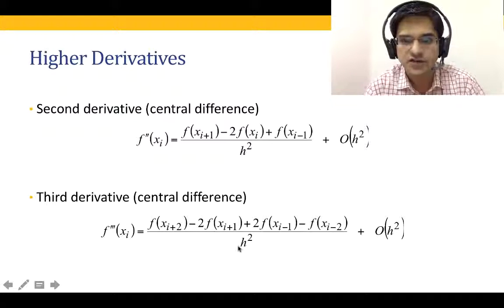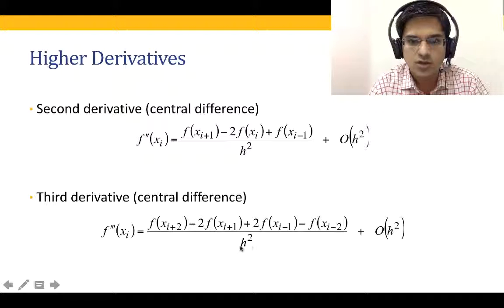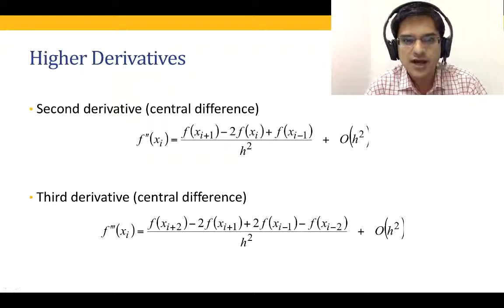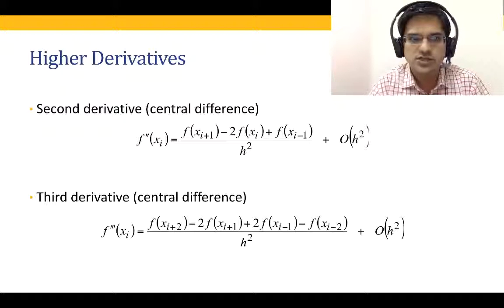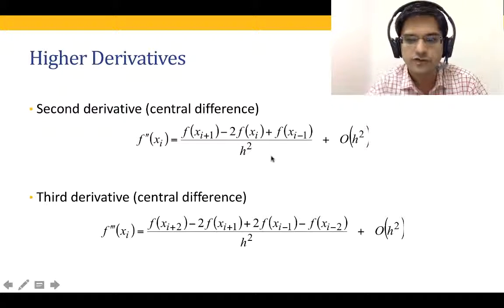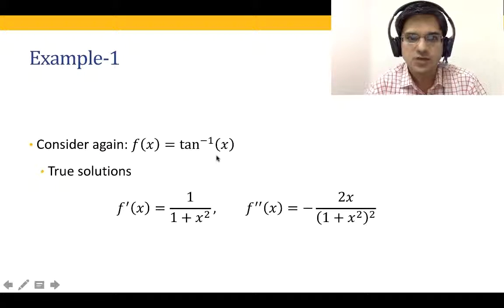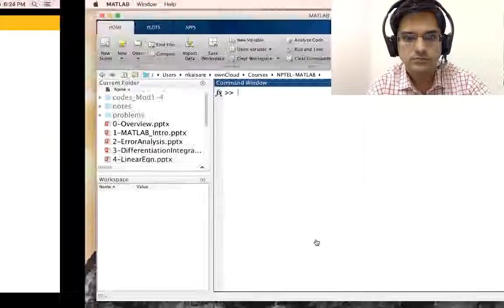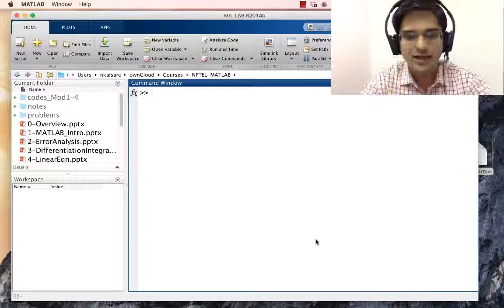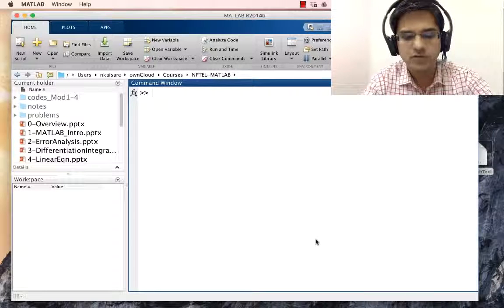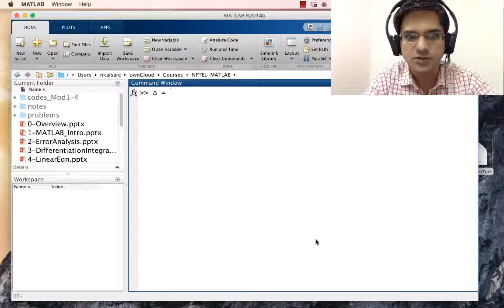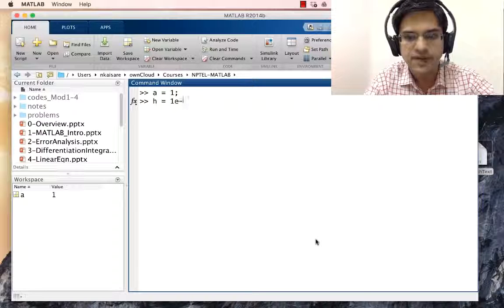This is the formula for the second derivative, this for the third derivative, and so on — we can compute formulae for higher derivatives. Note that the third derivative formula has h³, not h². In this lecture, we are only going to concern ourselves with the second derivative. So let us look at the problem: f(x) = arctan(x), and let us compute f''(x) at x = a = 1 with h = 1e-4.